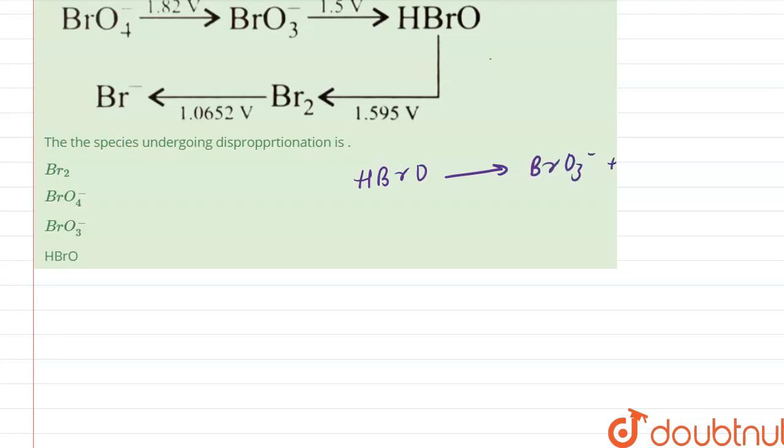Since the reaction is basically BrO3 minus when 1.5 volt is present, it comes HBrO. Reverse the above reaction, we will get HBrO with minus 1.5 volt will form BrO3 negative.